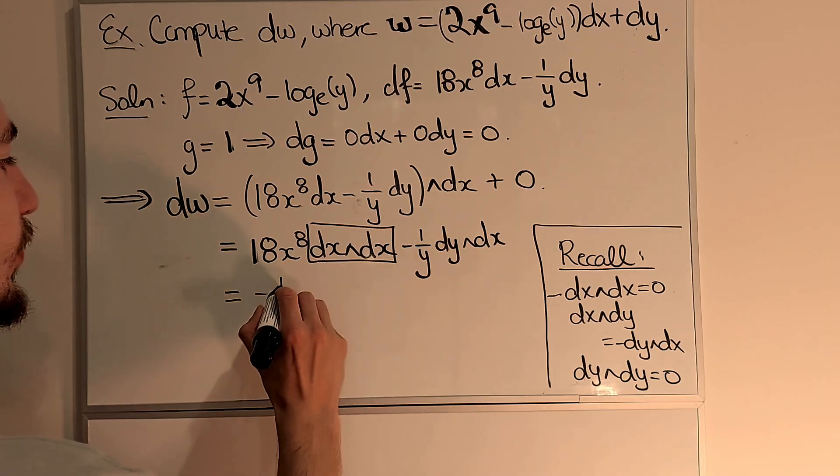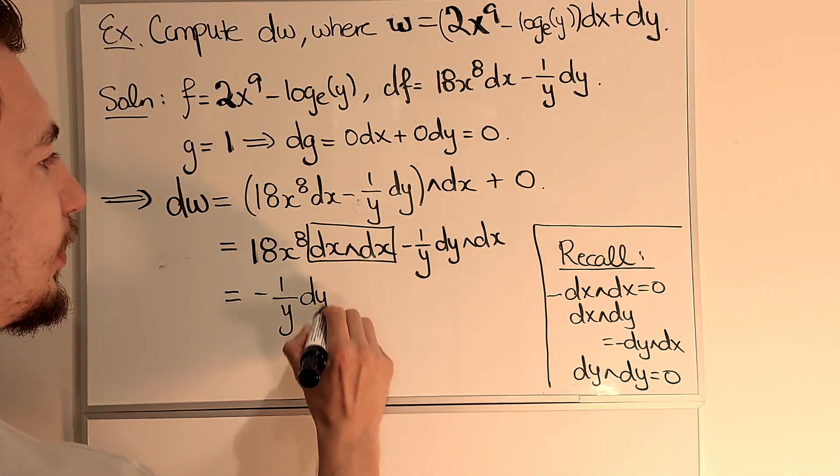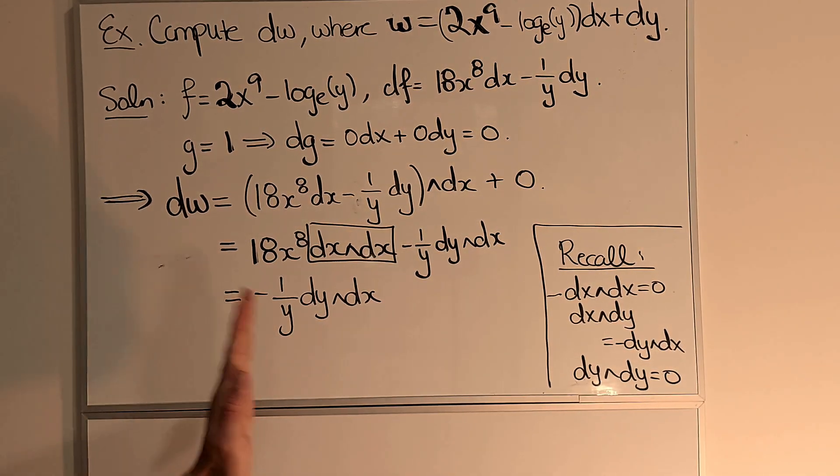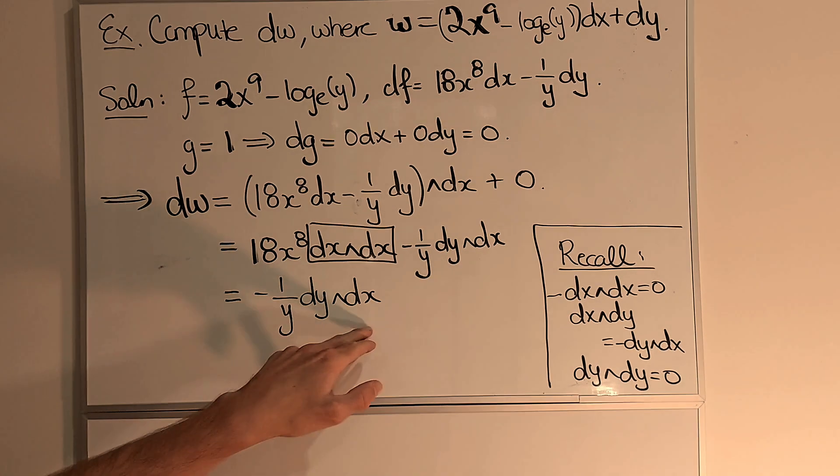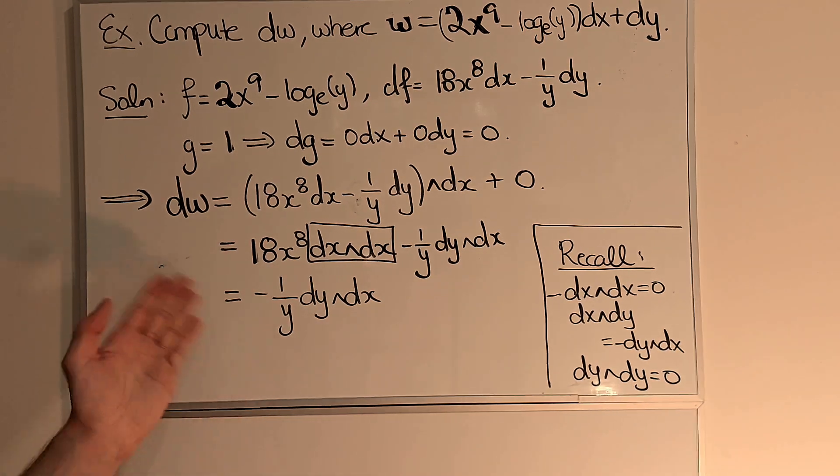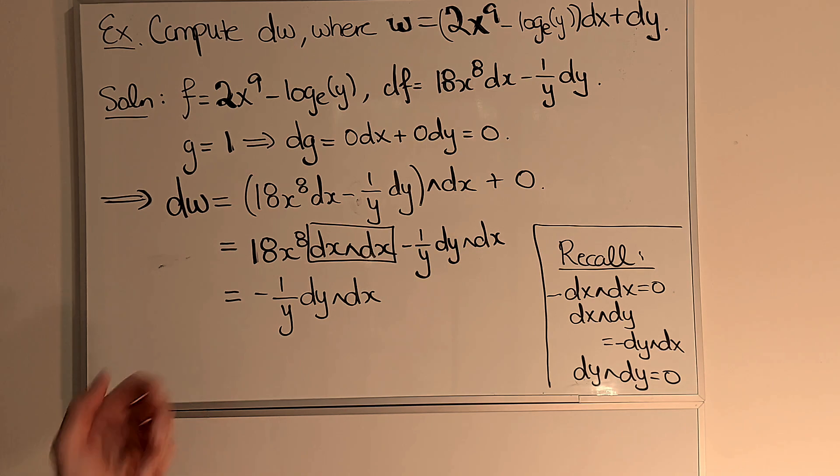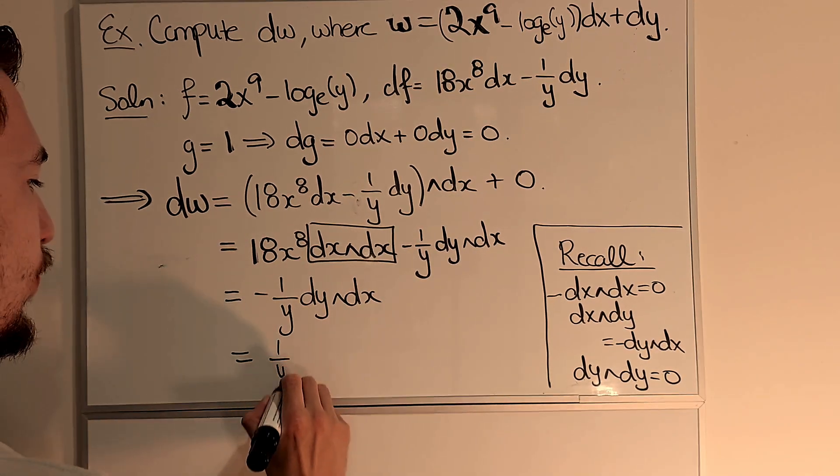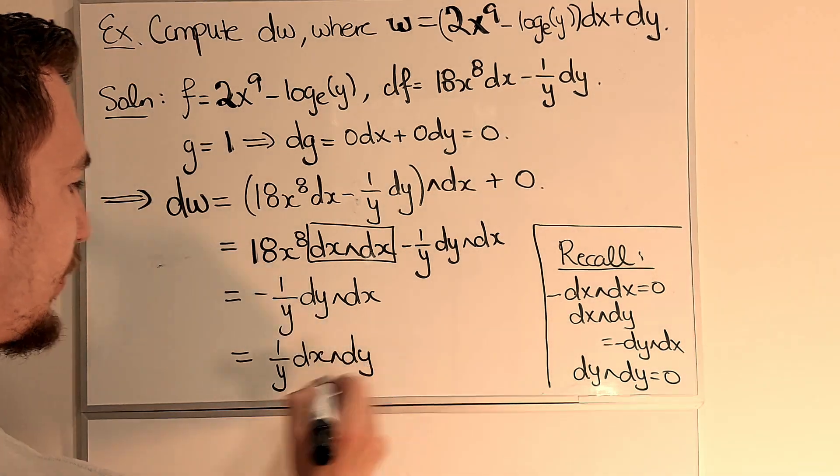So what I have is minus 1 over y dy wedge dx. And because I prefer to have dx wedge dy as opposed to dy wedge dx, although this is perfectly correct, it will be important to order them later. We can write this as 1 over y dx wedge dy.